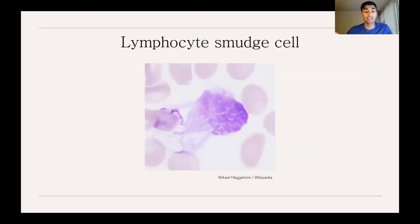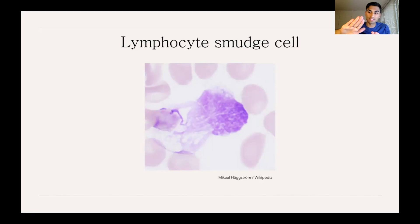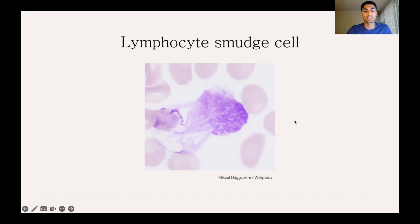On the blood smear, CLL is characterized by smudge cells — lymphocytes that appear as if they were smeared across the slide. If you see smudge cells on a blood smear, that is suggestive of CLL.